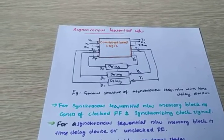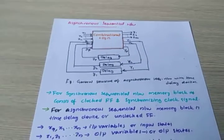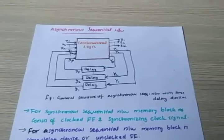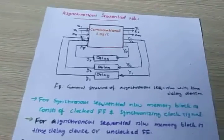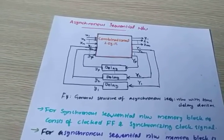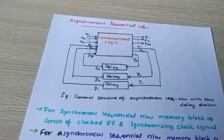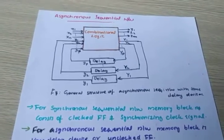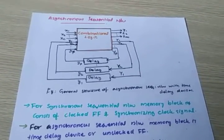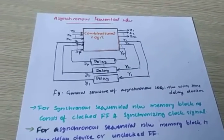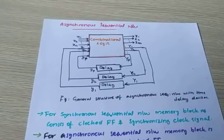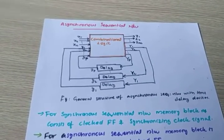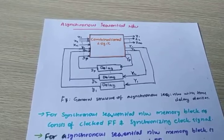Next is Asynchronous Sequential Network. This is the second module or second chapter for the syllabus. This section deals entirely with Asynchronous Sequential Networks. In the previous chapter we discussed about the Synchronous Sequential Network. This is Asynchronous.